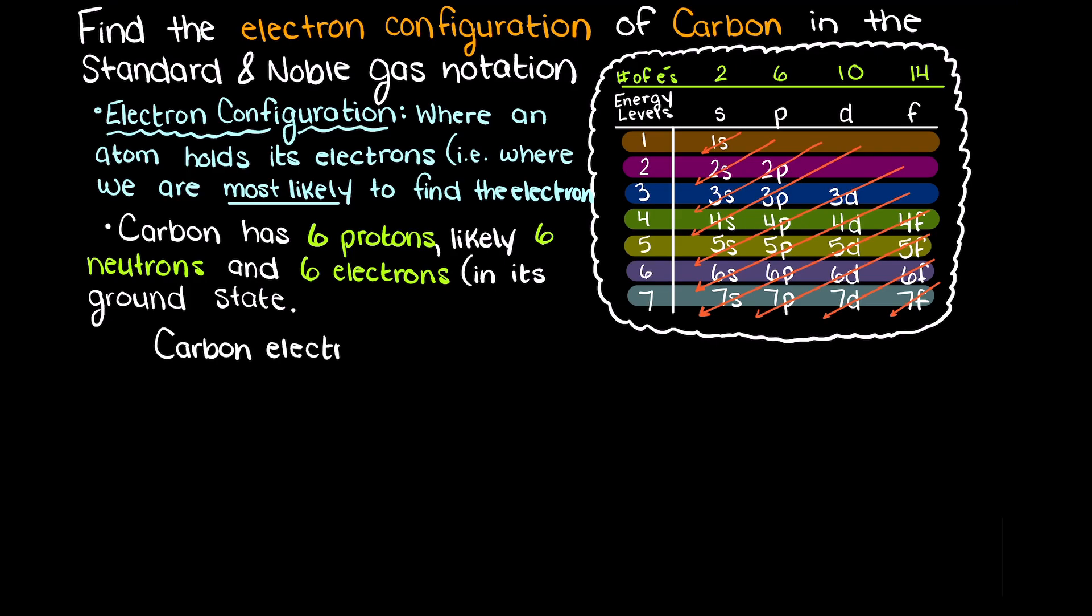Since we have 6 electrons to place, let's have a little counter on the top here and whenever we place some of those electrons, we can move them to the right spot. We always begin with 1s, as we discussed before, the s subshell can hold 2 electrons. So that leaves us with 4 electrons.